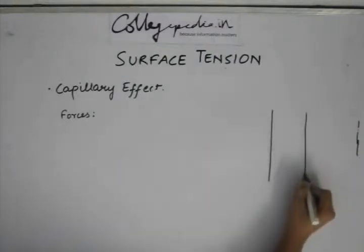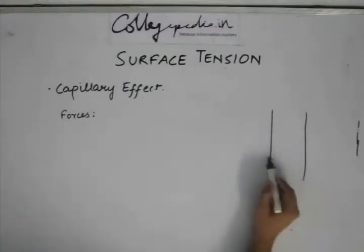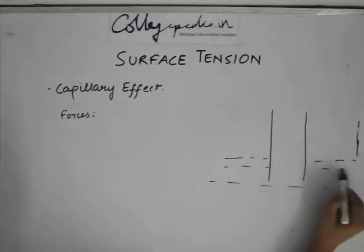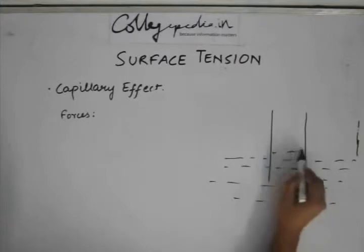What we do is, let's say we have the capillary tube like this, this is the liquid filled up and this is the meniscus.